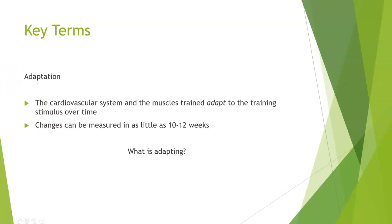Adaptation — whether we're looking at stretching adaptation or strengthening adaptation, if you think of Wolff's Law, the same thing applies to aerobic training. We need to challenge the system in order for it to adapt, which makes it get better. The cardiovascular system and the muscles trained adapt to the training stimulus over time, and changes can be measured in as little as 10 to 12 weeks. This would result in more mitochondria density, more blood running to the area, and so forth.